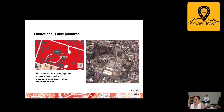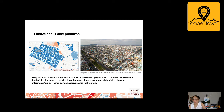Our approach of course has limitations. One already mentioned is that we do require exceptional computational power for the back-end work; however, the map is fully available online and even on your mobile device. Other limitations include false positives — for example, street blocks where lack of public access is intentional, such as embassies, universities, or military bases, may show up as informal settlements, as it does here with the U.S. Embassy in Monrovia. It is also possible for a well-known slum like Neza in Mexico City to show up as a well-connected neighbourhood because it has relatively high levels of street access. Therefore, street-level access alone is not a complete determinant of informality or slumness within the urban fabric, and other poor services may also be lacking.